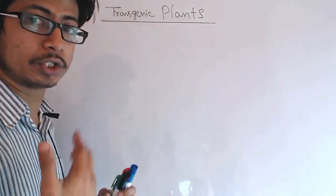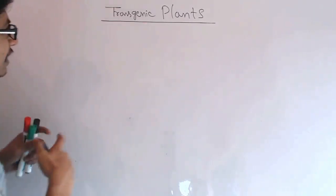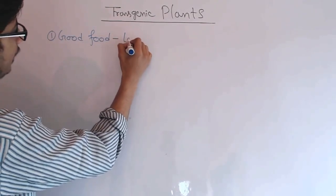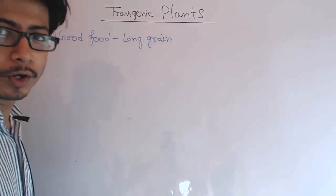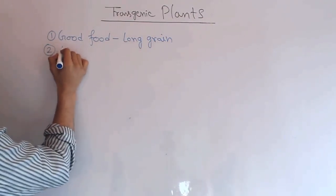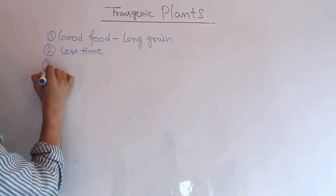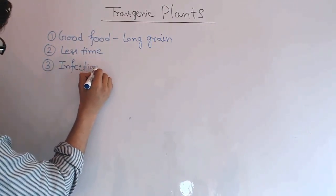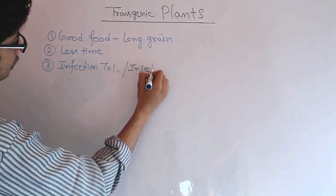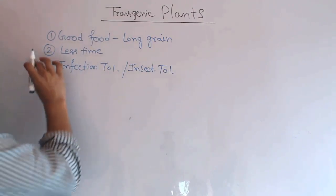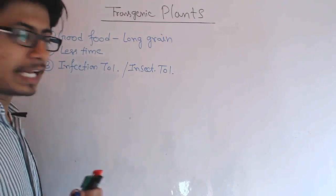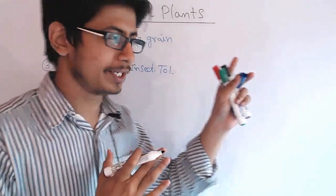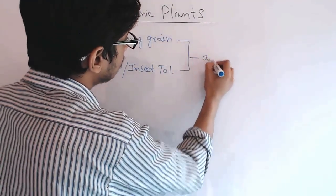That is the idea behind transgenic technology for plant development. For example, if we're working with rice, we want: long grain rice (because everyone loves long grain), it should be less time-consuming to grow, it should be drought tolerant, infection tolerant, and insecticide tolerant. So the tolerance should be higher and the quality should be better — all in the same plant.